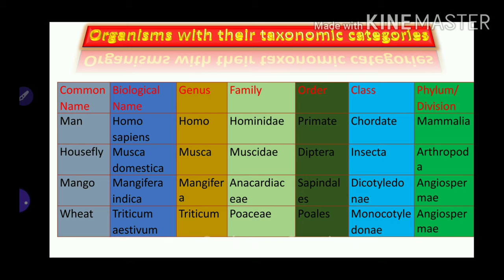Organisms with their taxonomic categories — a table. Common name: man; biological name is Homo sapiens. Housefly is Musca domestica, where Musca is the genus name and domestica is the species name. Its family is Muscidae, order Diptera, and class Insecta.